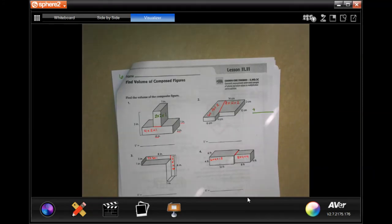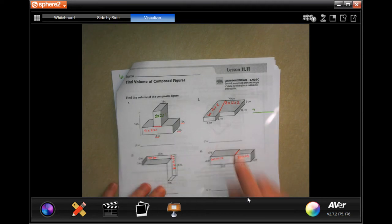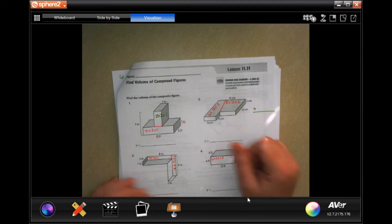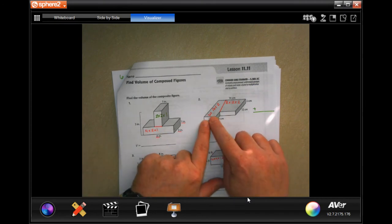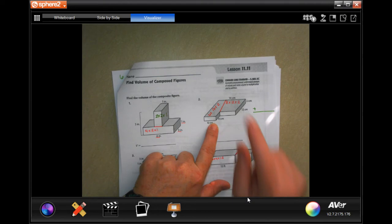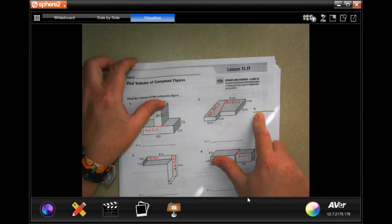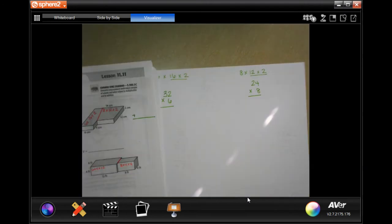Hi guys, welcome to fifth grade chapter 11 lesson 11. We're going to get started with number two. We're finding the volumes of each of the shapes that we know, each one of the rectangles, and then we're just going to add them together. Over here I just rewrote the numbers in number two.